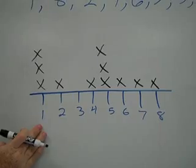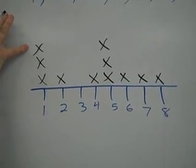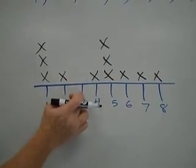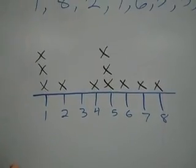Now remember that when an x is above a number, that is how many times it occurs. If there is no x there, the number did not occur in the number sequence.